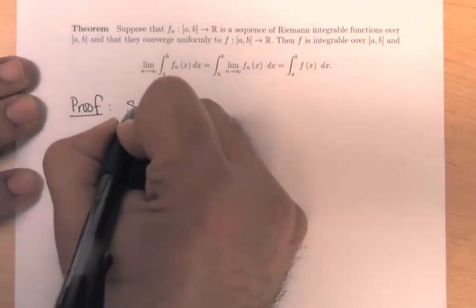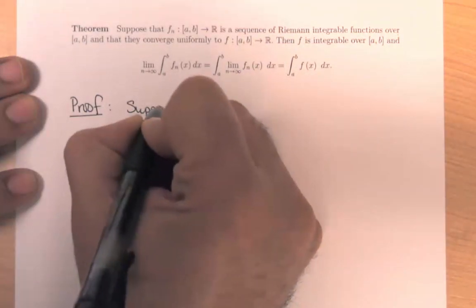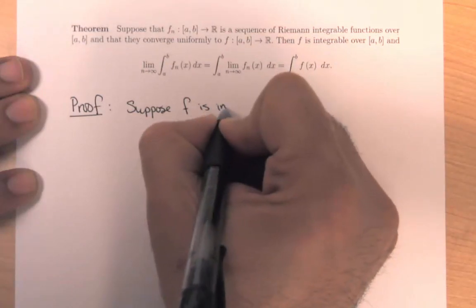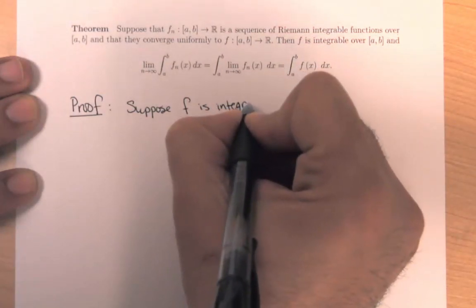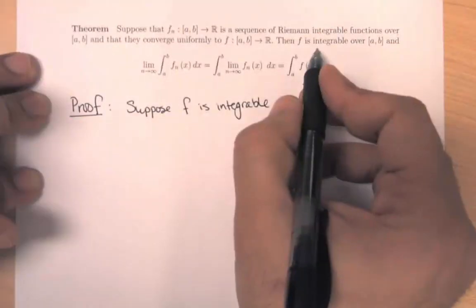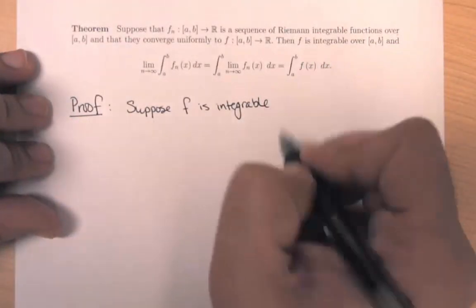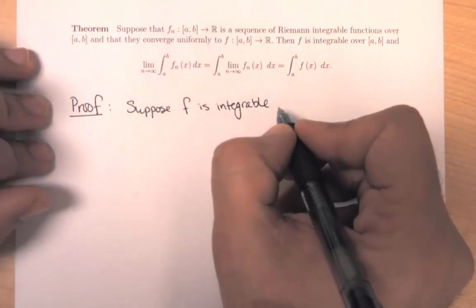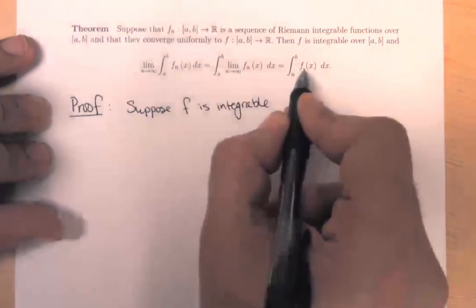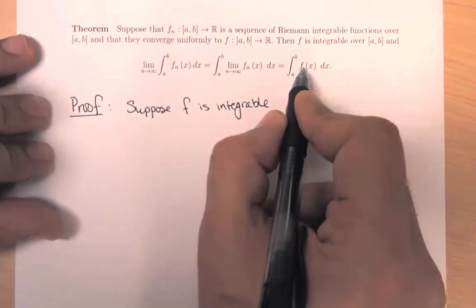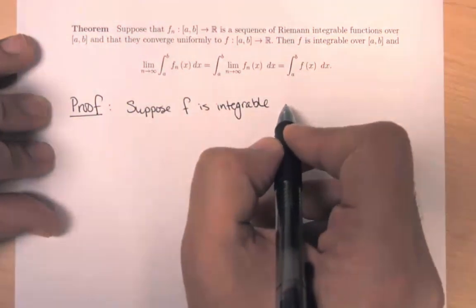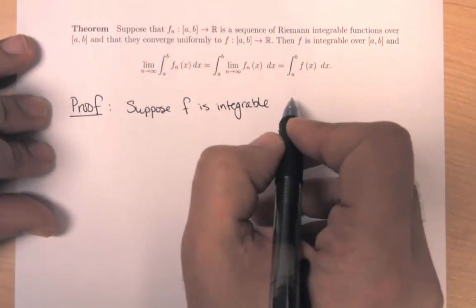Suppose f is integrable. It's a bit like cheating to suppose it's integrable, but we're going to prove the limit equality first — assuming this number exists — and then prove that it actually is a number that exists. So we'll do the proof slightly out of order. Let ε > 0.